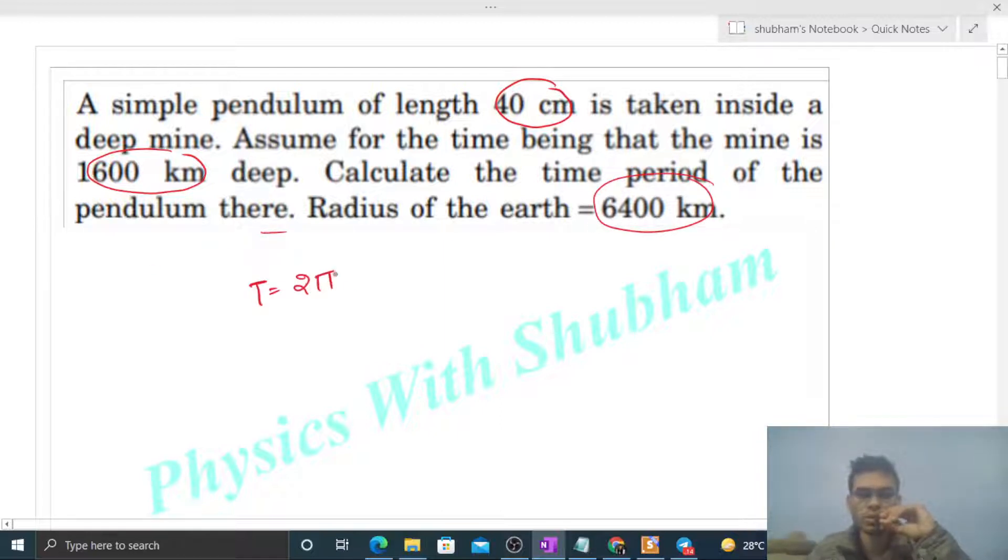Fine. So time period of a simple pendulum is 2π times the square root of L upon g. And length is given as 40 centimeters, that is 0.4 meters. And g ka value hame find out karna padega inside the earth.